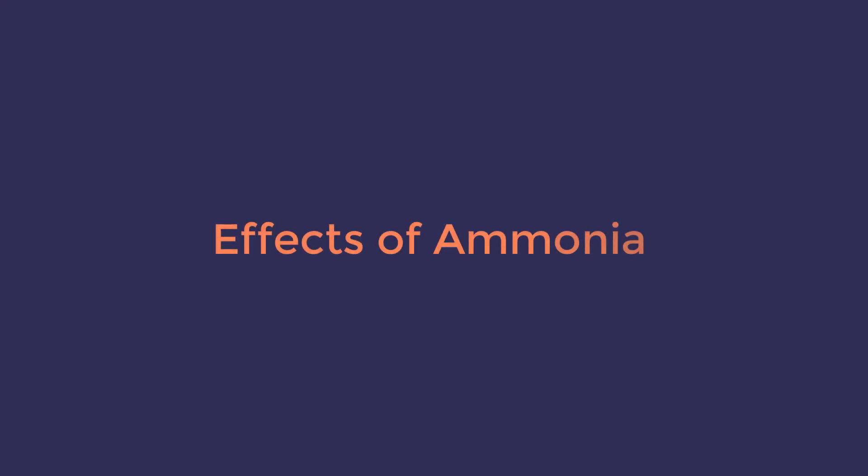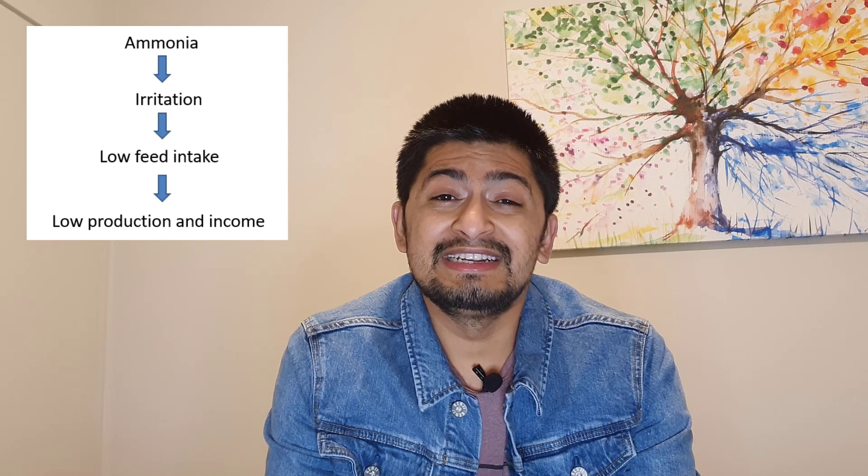Now let's look at the impacts of ammonia on broilers and layers. The first impact is the general effect: high ammonia causes irritation, which reduces the chicken's appetite. If the chicken doesn't eat, growth is affected, productivity drops — egg production and meat production both decrease — and the overall farm economy is impacted.